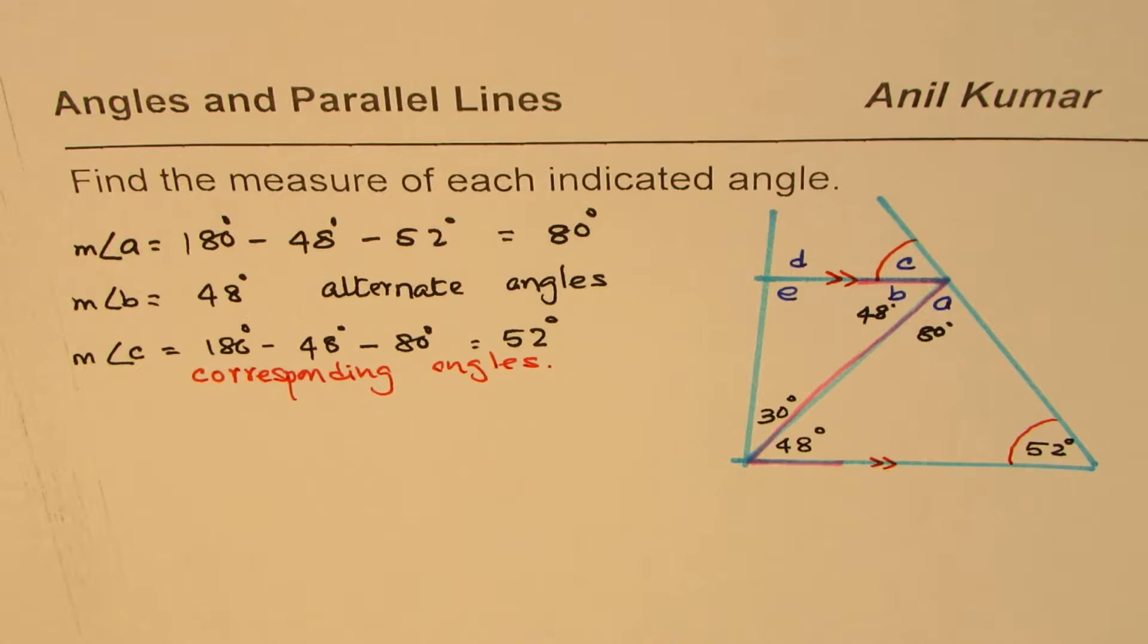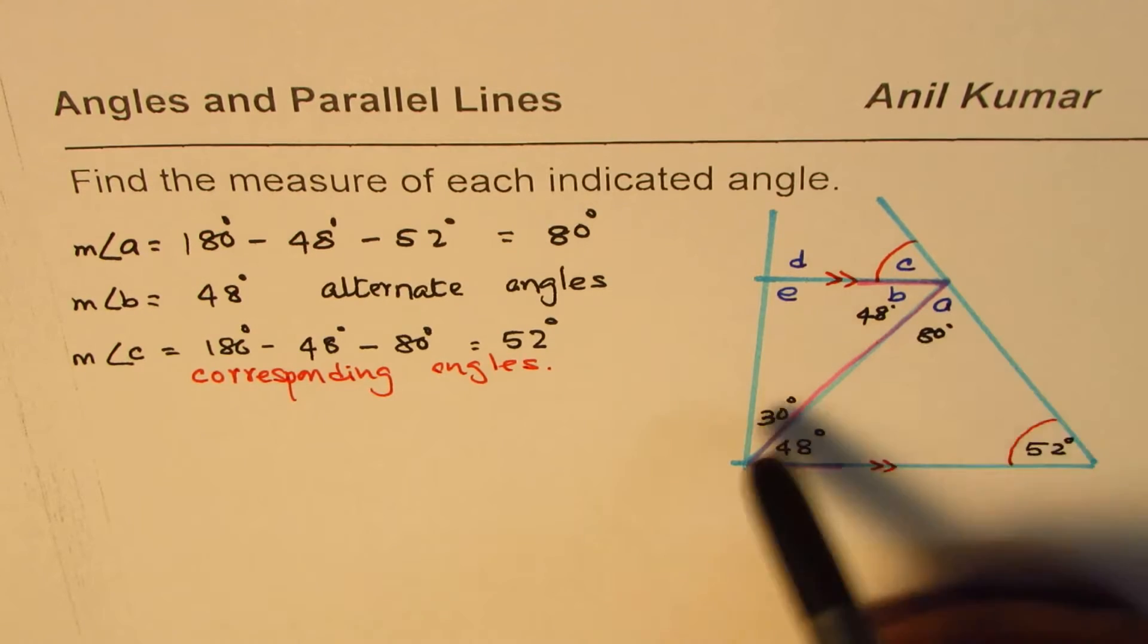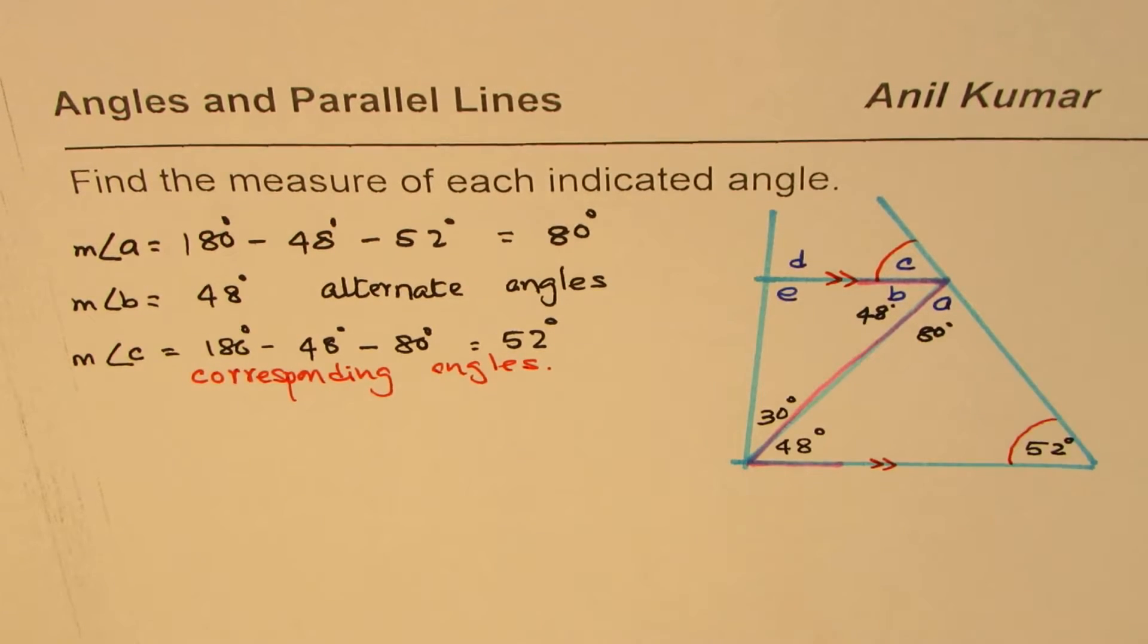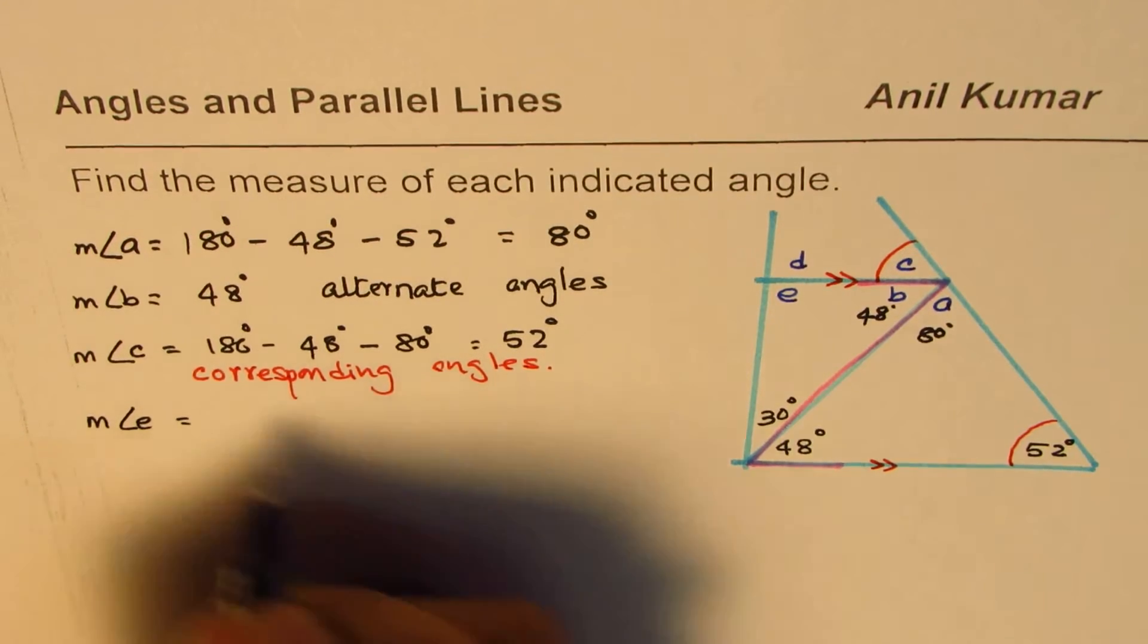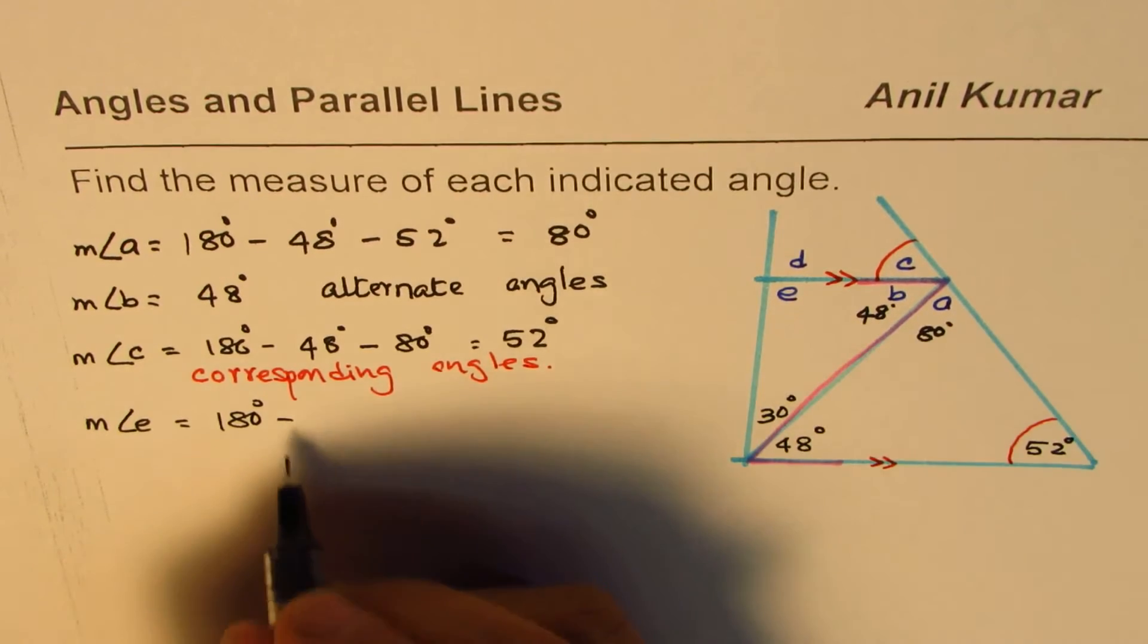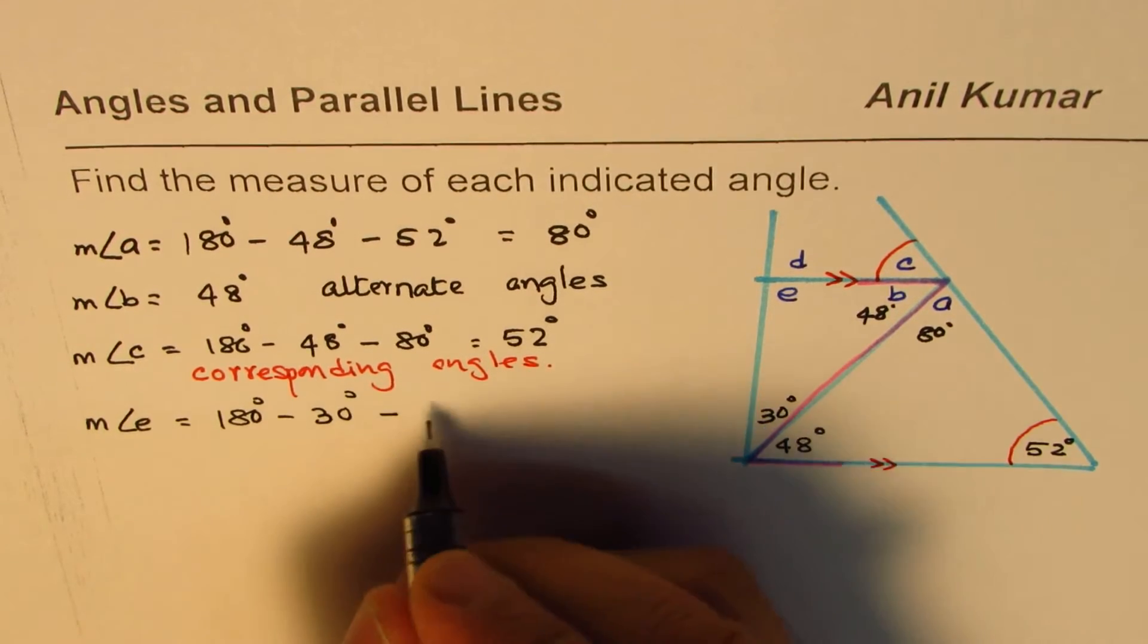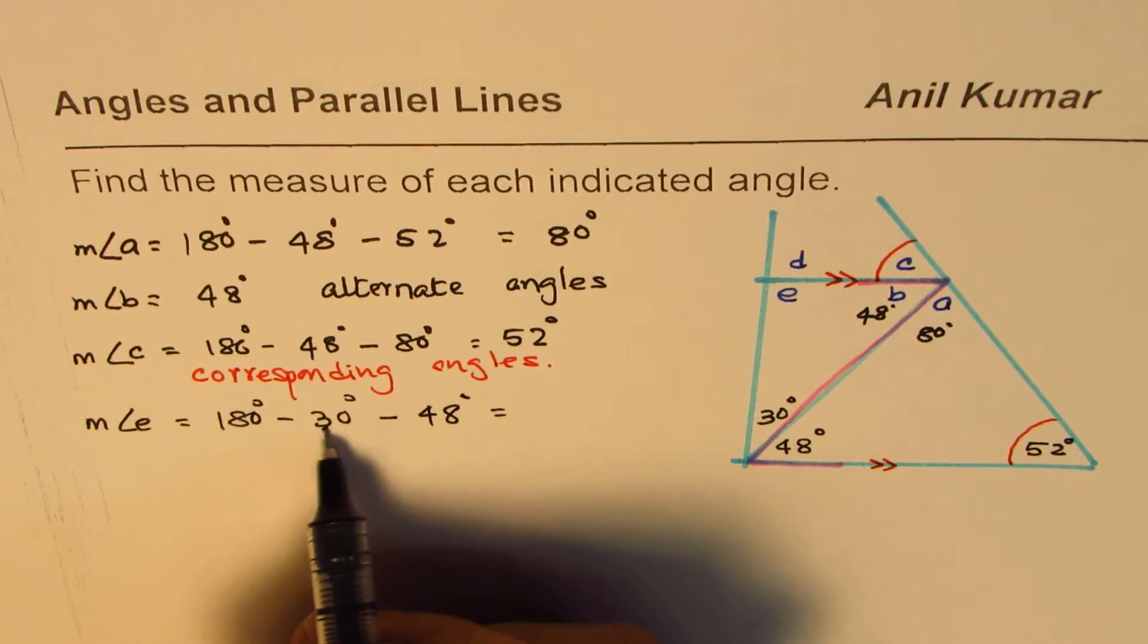Now you can see the patterns here. You have Z pattern. Now in these two parallel lines, it is better to use the triangle itself to find measurement of angle E. We can say measurement of angle E is equals to 180 degrees, take away these two, which is 30 and 48. So 150 take away 48 is 102 degrees.